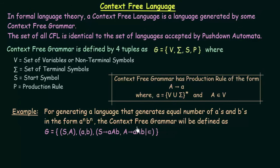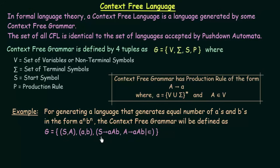We will see how this language is generated using a context free grammar. The grammar G is defined with {S, A} as the set of non-terminal symbols and {a, b} as the set of terminal symbols. The production rules are: S → aAb, A → aAb, and A → ε (the empty symbol). The start symbol is S.